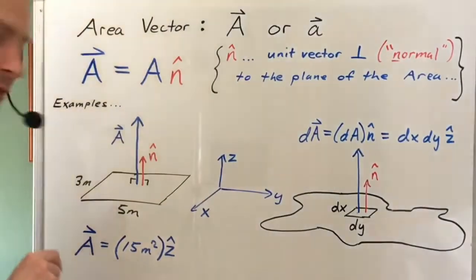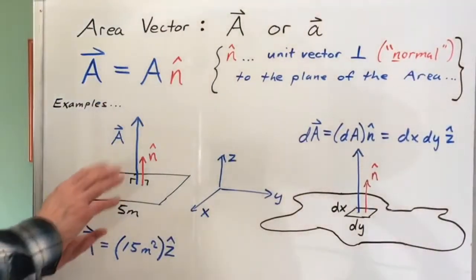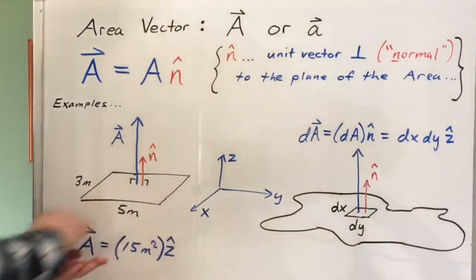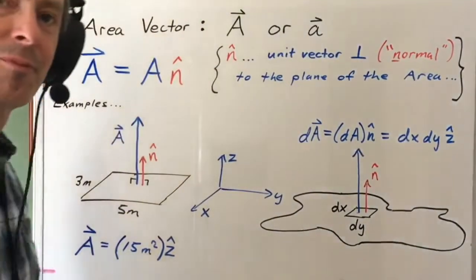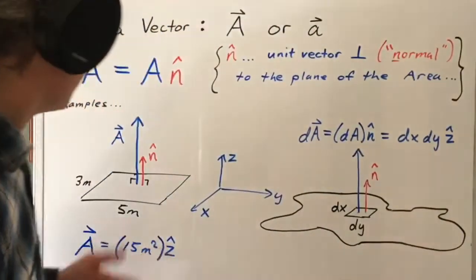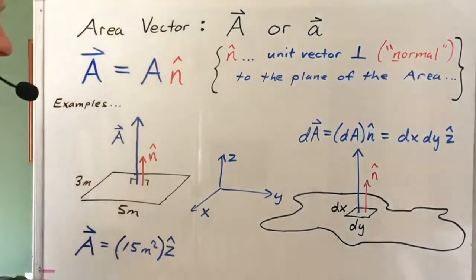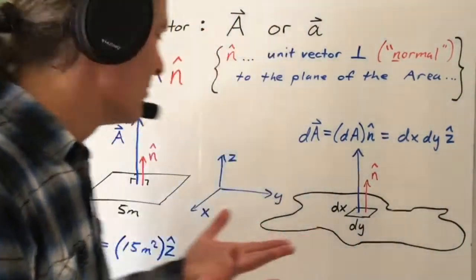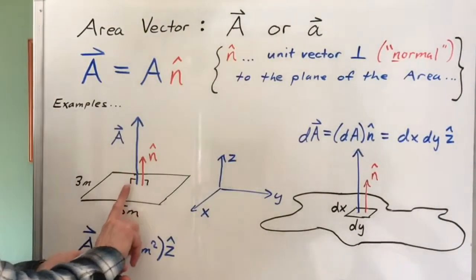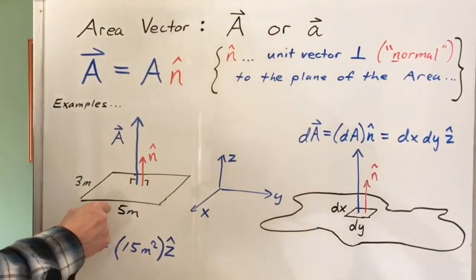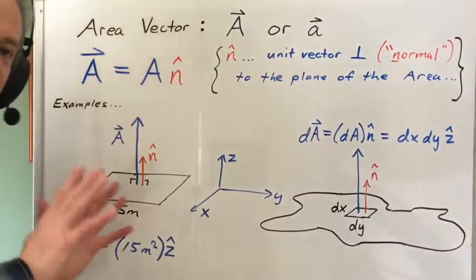The direction of the area vector is taken to be a direction perpendicular to the plane of the area. So in this particular case, my area is oriented in the xy plane, I could take the z direction to be the direction of the area vector. I could also use the negative z direction — it doesn't matter. In advanced physics, the direction of the area vector that you take corresponds to some mathematical way of how you traverse the perimeter, but we're not going to get into that.